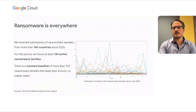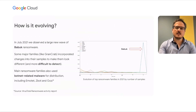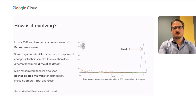We also observed attackers distribute their malware in waves, some of them doing so aggressively in terms of the number of samples created. More interestingly, in addition to the most notorious attacks, we found a constant baseline of 100 active ransomware families. Attackers use different strategies for spreading their malware. Many of them systematically create a large amount of fresh new samples before spreading, which makes detection difficult.